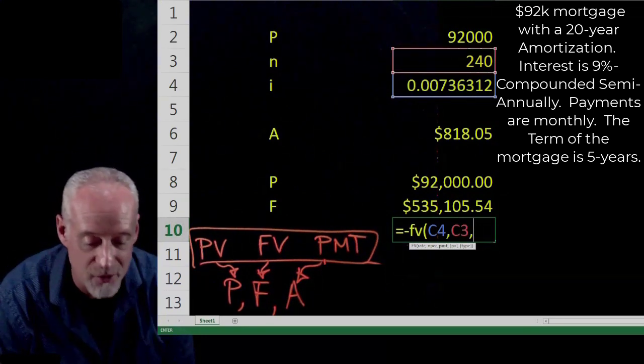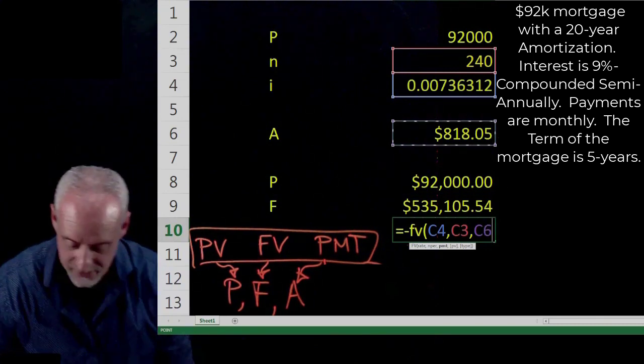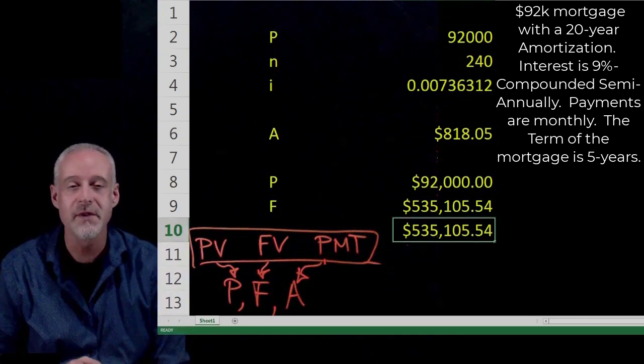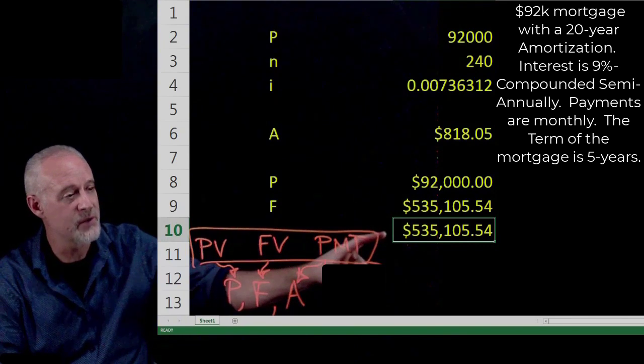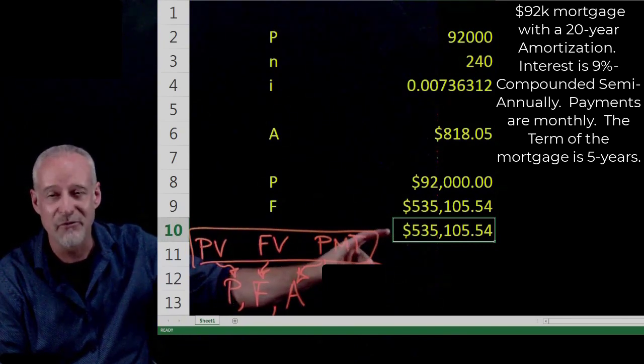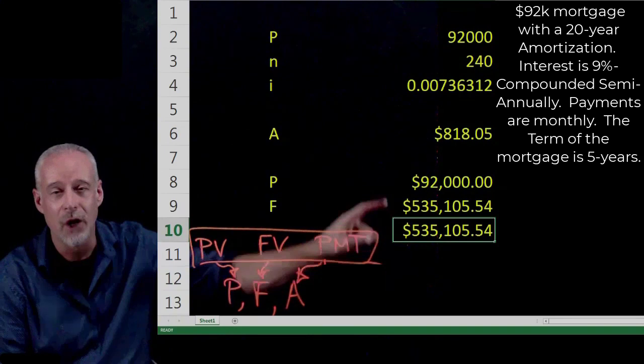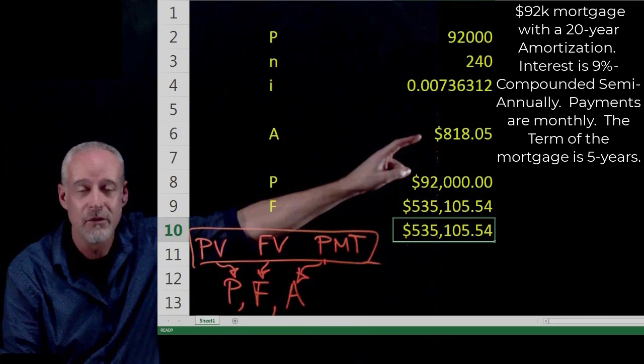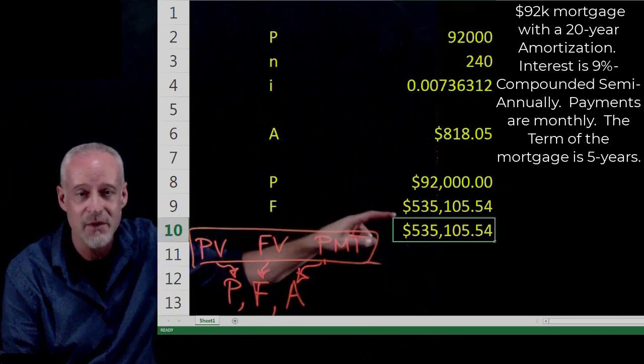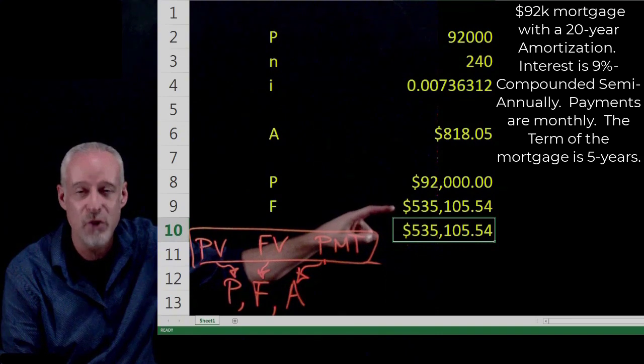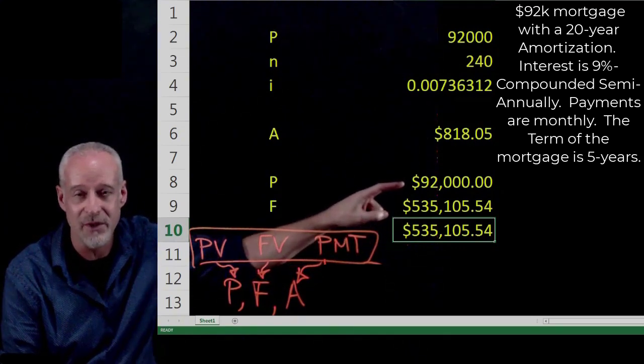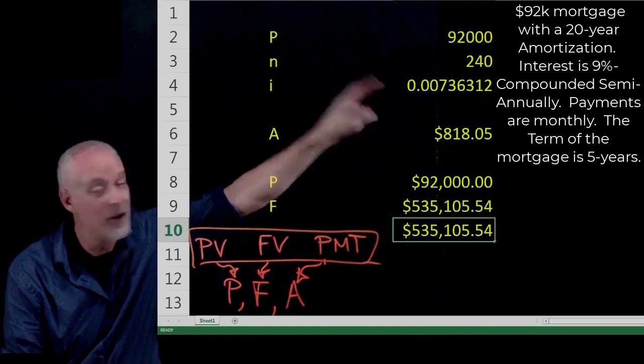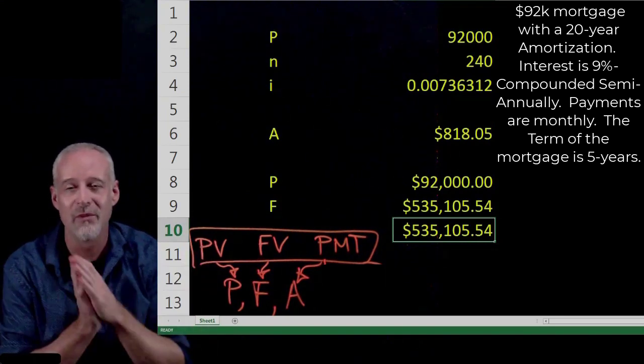And now the future value of all of these payments, let's see what we get. Look at that. Boom. So these two formulas, what I've highlighted here, this cell is the future value of 240 payments of $818.05. And this cell is the future value of $92,000 where there's, when you don't make any payments, you just charge this interest rate right here for 240 periods. And they come out to the same value.